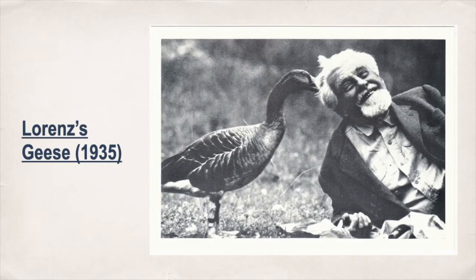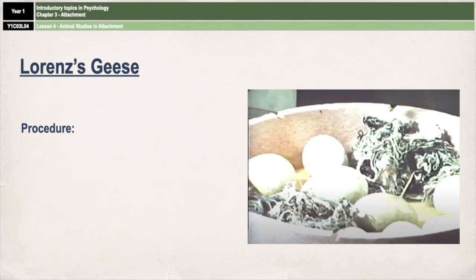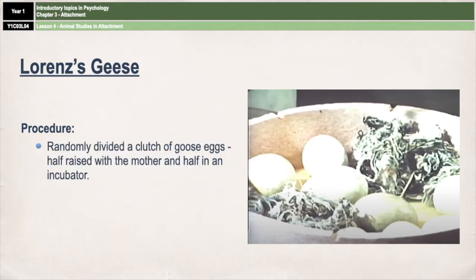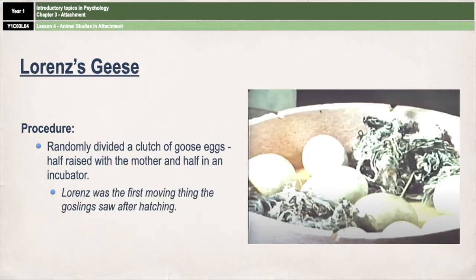Lorenz conducted animal studies using geese in order to investigate the relationship between infant animals and their mothers. The procedure he used was very simple. He got a clutch of goose eggs and randomly divided them into two groups. One group was left with their mother, so that when they hatched she was the first thing the new goslings saw, and the second group were placed in an incubator, so that when they hatched Lorenz was the first thing they saw.